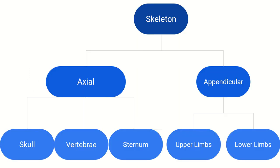The skeleton is divided into two parts: axial skeleton and appendicular skeleton. The axial skeleton is further divided into skull, vertebrae, and sternum. In the appendicular skeleton we have upper limbs and lower limbs.